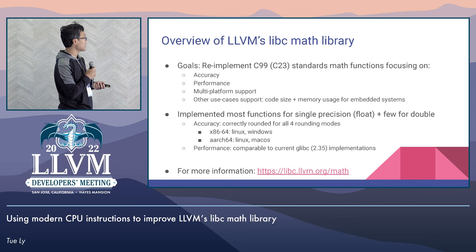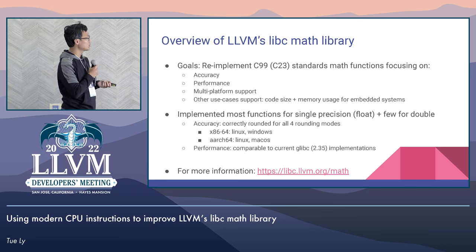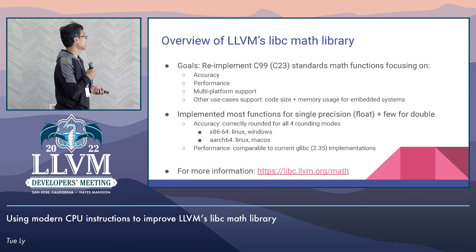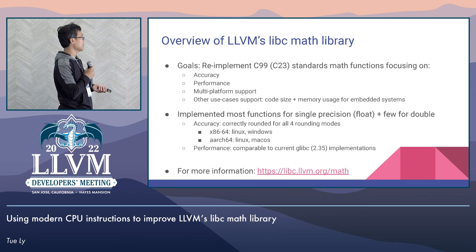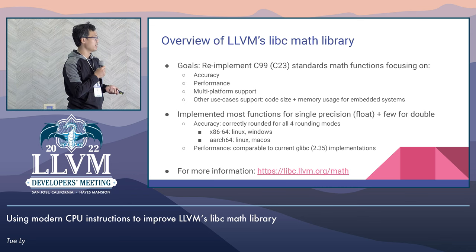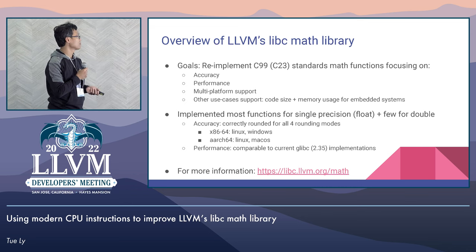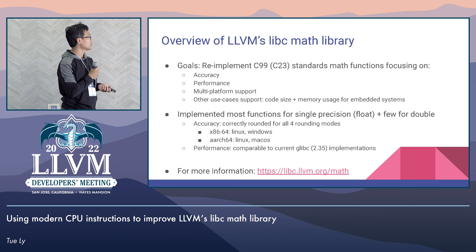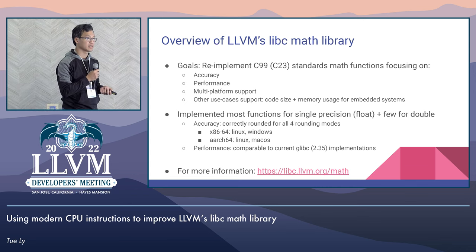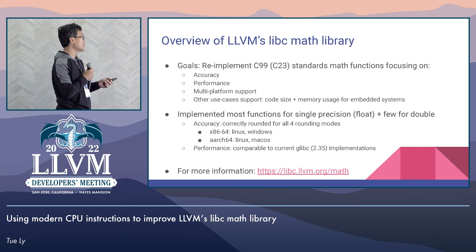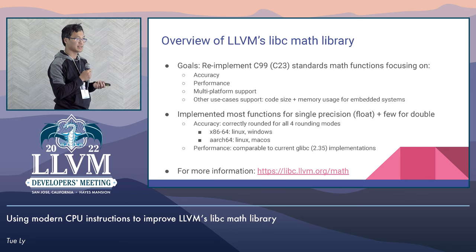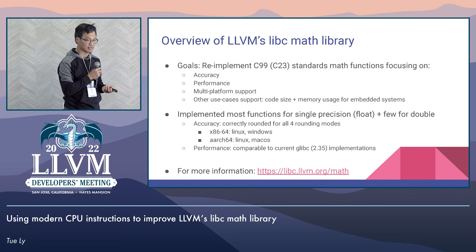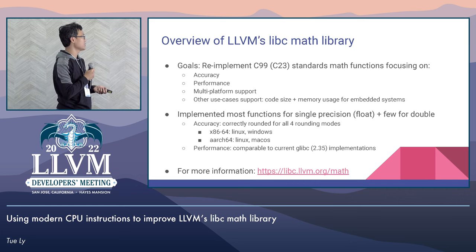The current status is that we have implemented almost all of the single precision functions, and we started to work on double precision. Currently we have tested on x86 and ARC support. For the single precision functions implemented, they are all correctly rounded with respect to all rounding modes. The performance is comparable to GCC as tested on x86 Linux.